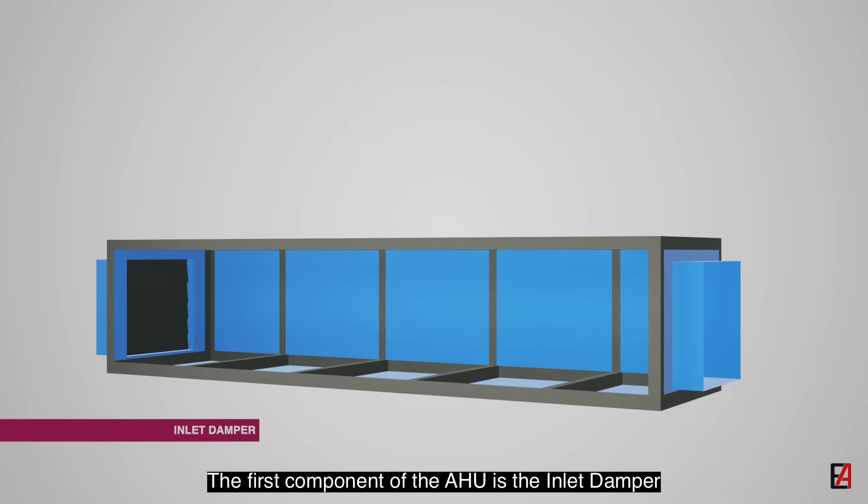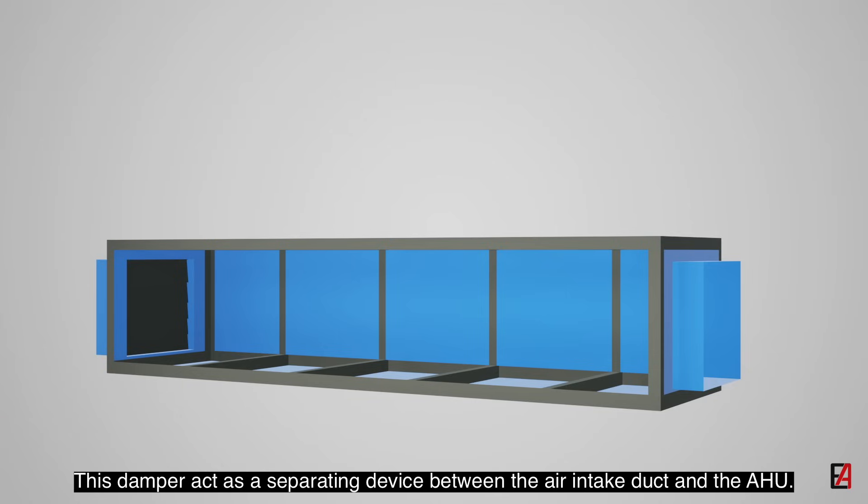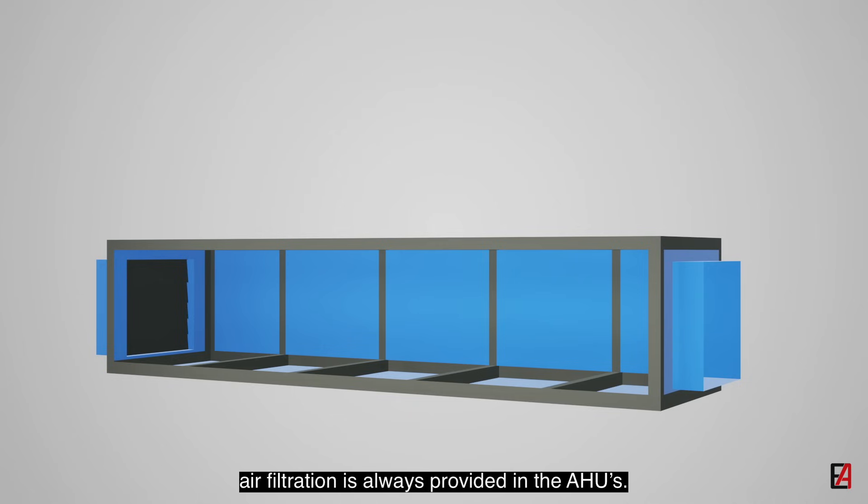The first component of the AHU is the inlet dampers. This damper acts as a separating device between the air intake duct and the AHU. In order to provide clean and dust-free air to the building occupants, air filtration is always provided in the AHUs. Filtration is typically placed first in the AHU to keep all the downstream components clean.